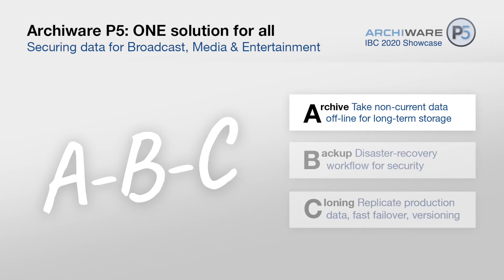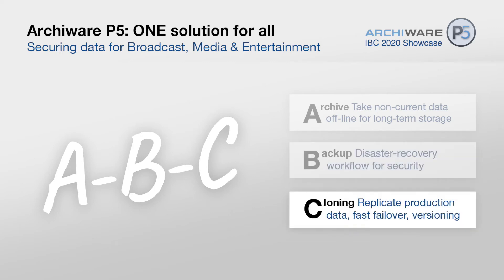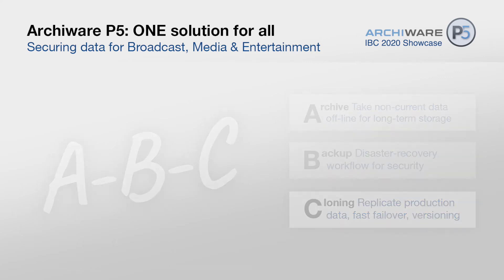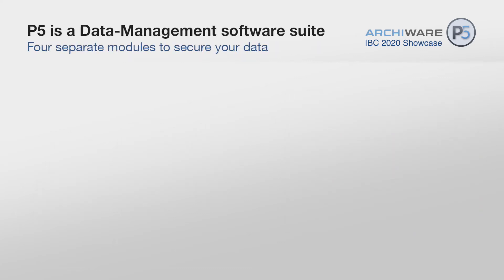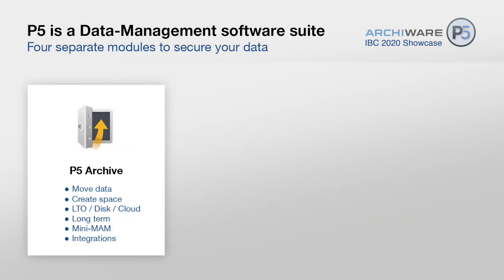P5 is one solution for all ABC — archive, backup, and cloning — securing data for broadcast, media, and entertainment. Archive takes non-current data offline for the long term. Backup is a disaster recovery workflow for security. Cloning replicates production data for fast failover, including retaining versions of older files. The P5 archive module moves data from production storage to disk, tape, or cloud to create space, for long-term storage and retention, including mini-MAM media asset management functionality, plus integrations with many third-party MAM products.